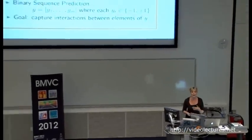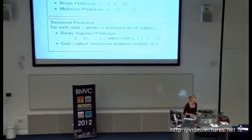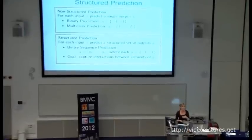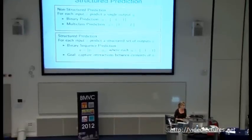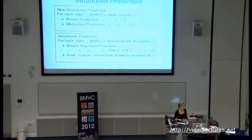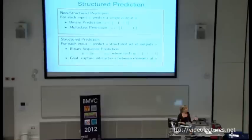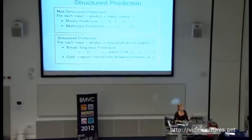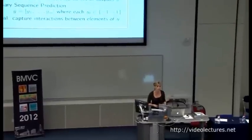What do I mean by structure prediction? You are probably all familiar with classic binary or multi-class prediction, where there is a single input and a single label. In structure prediction, the input itself is complex or structured — for example, your input might be a sequence and your output will also be a sequence of labels. In the rest of the talk, I'm going to focus particularly on sequence prediction.